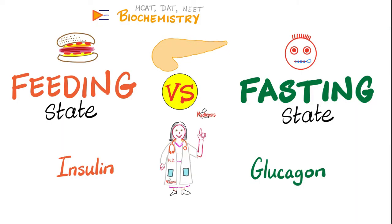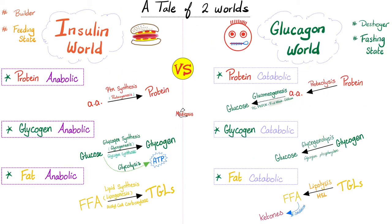The most important question in metabolism is: are we in the feeding state or the fasting state? If we are in the feeding state, it's the insulin land. If we are in the fasting state, it's glucagon land. In the feeding state, when I eat, I need to build up stuff — amino acids will be built into proteins, glucose will become glycogen, free fatty acids will become triglycerides. But in the fasting or starving state, it's the opposite — it's catabolic. I need to break down the big stuff into small stuff to give me readily available sources of energy, otherwise I will starve.